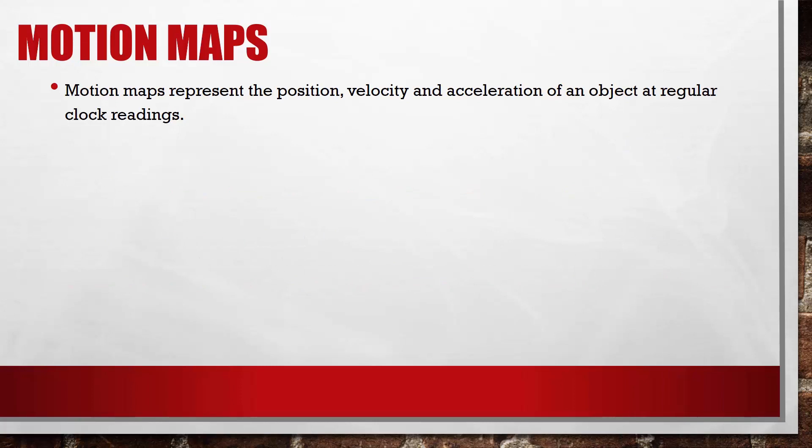Motion maps can also be used to represent more complicated motion. Here, the car will move to the right at a constant velocity, stop for a few seconds, and then move to the left at a slower constant velocity.